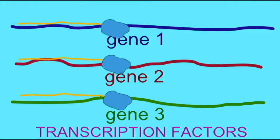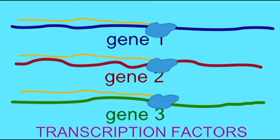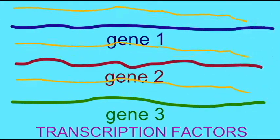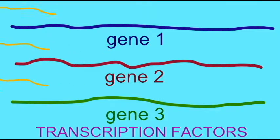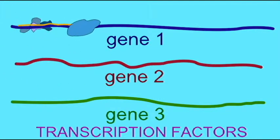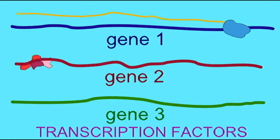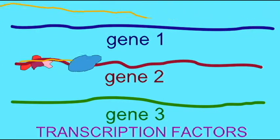In this animation, a cell is controlling which genes are active by the transcription factors which are produced. A gene can only be expressed when its appropriate transcription factors are made.